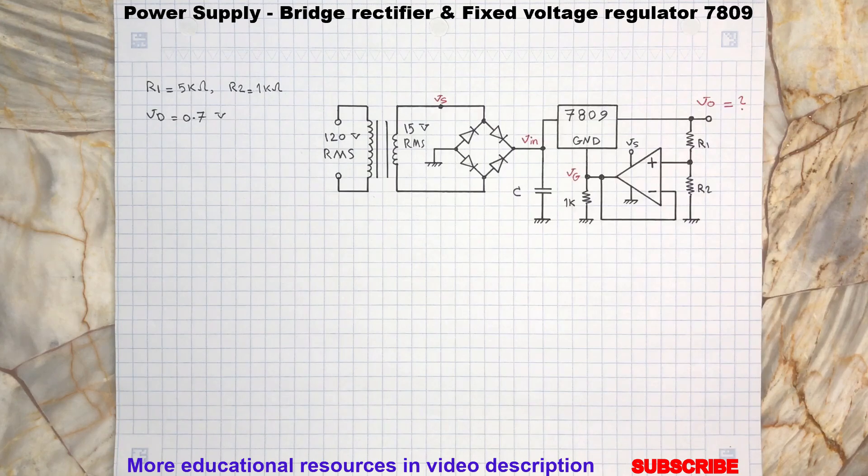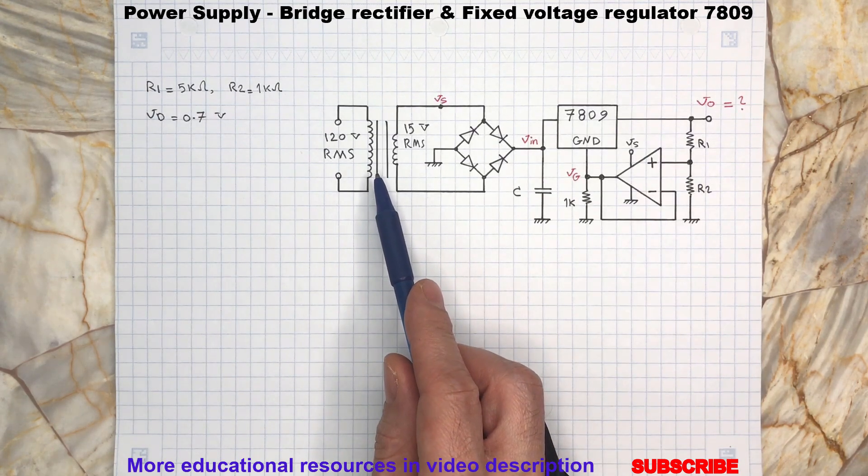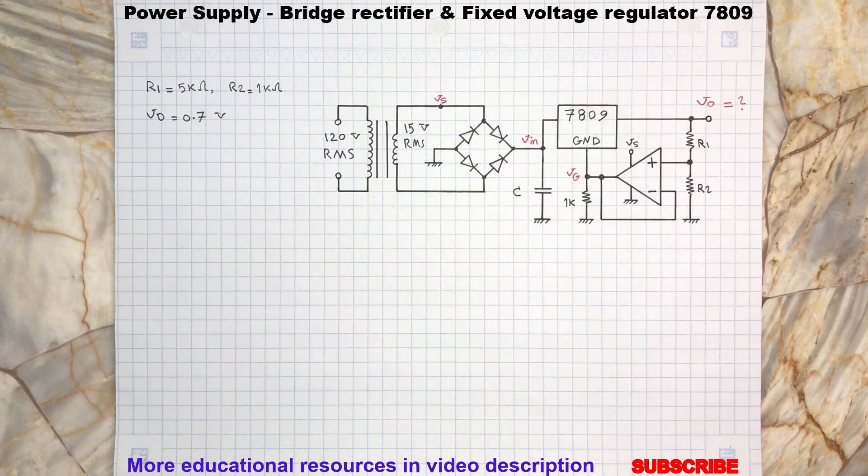This circuit consists of two sections. The rectifier section which includes the step-down transformer and the full wave bridge rectifier. And second section is the three terminal voltage regulator.